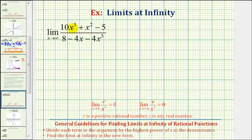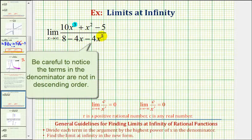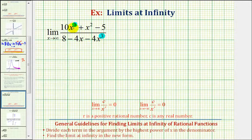Notice the degree of the numerator is degree three, and the degree of the denominator is also degree three. Now that we know this, let's take a look at these shortcuts for determining limits at infinity for rational functions.